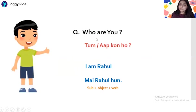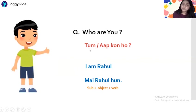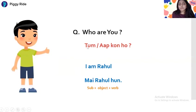Who are you? In Hindi, 'Who are you' is Tum Kaun ho or Aap Kaun ho. We use either Tum or Aap. Who means Kaun, and Are means ho. If you are asking an elder person, you say Aap Kaun ho. If asking a younger person, you say Tum Kaun ho. It depends on the context.